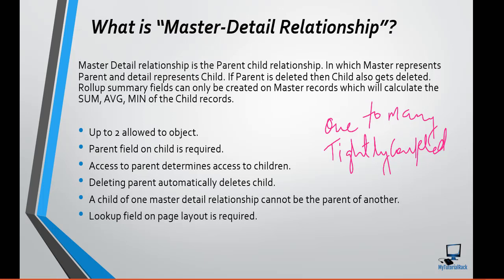The master-detail relationship is a parent-child relationship in which the master represents the parent and the detail represents the child. So if the parent is deleted, the child also gets deleted in the case of master-detail relationship. There is also a very important field called rollup summary.